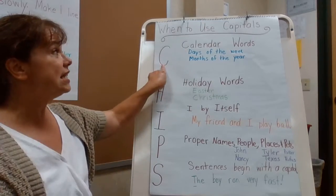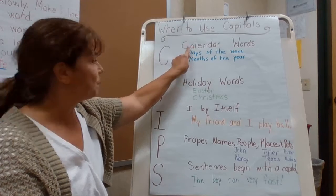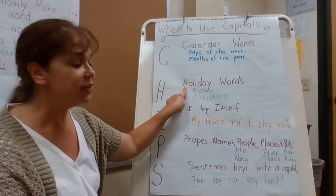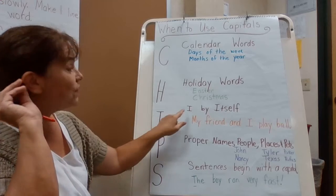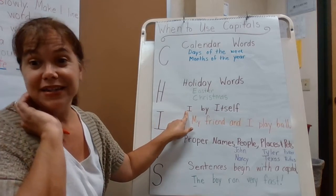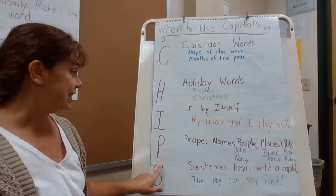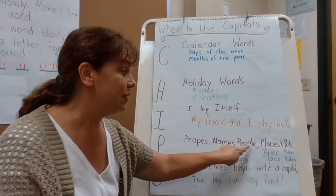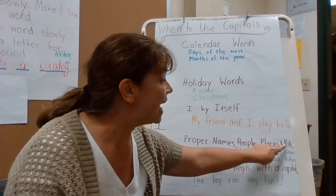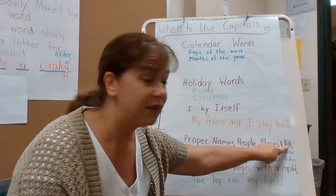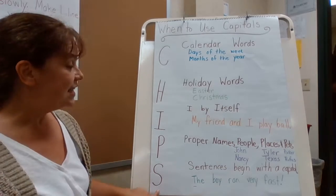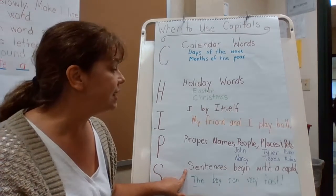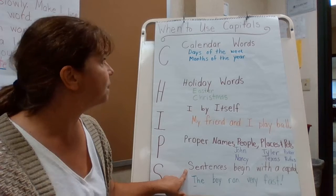The C stands for calendar words. The H stands for holiday words. The I stands for I by itself. The P stands for proper nouns, like people's names, specific places, and the names of pets. And S stands for — we already know this in second grade — sentences begin with a capital letter.